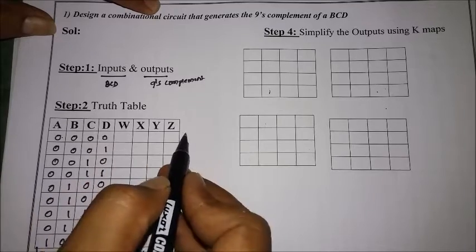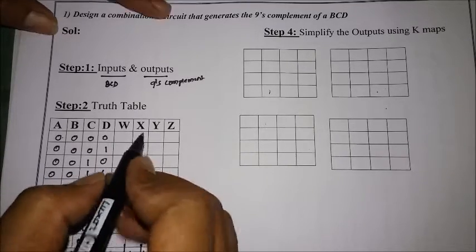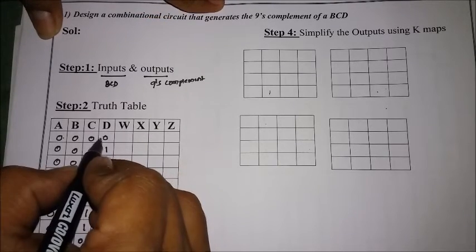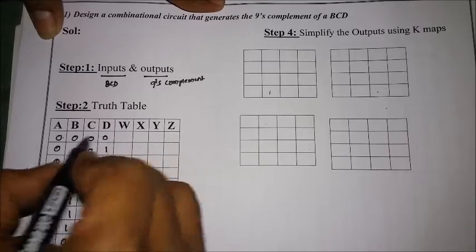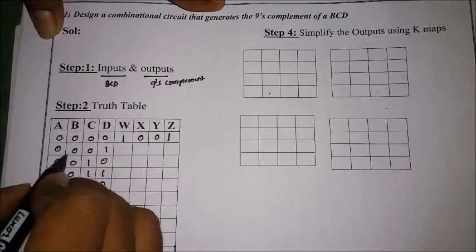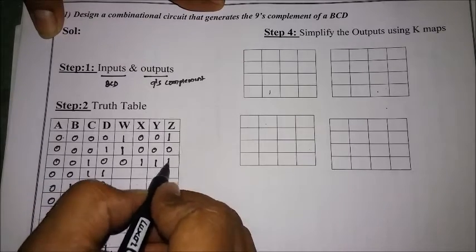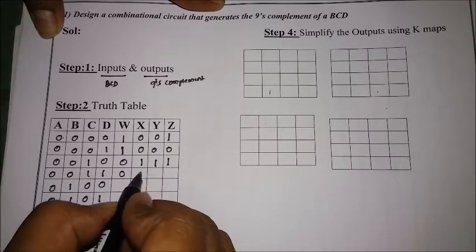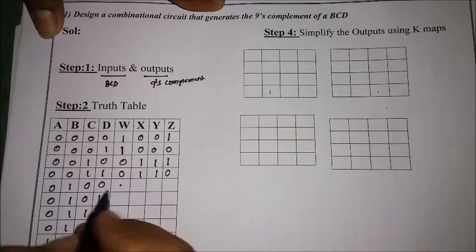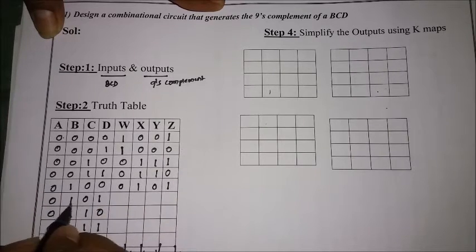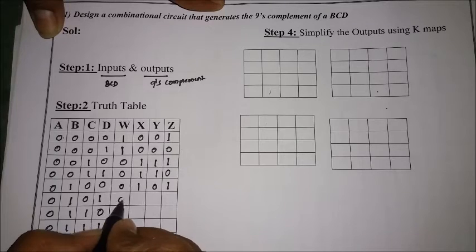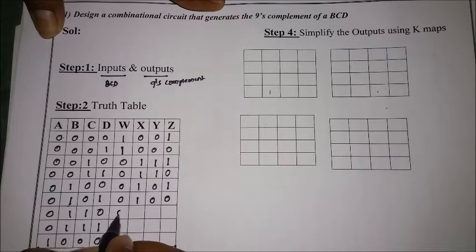The 9th complement is obtained by subtracting each digit from nine. So: 9 minus 0 is 9, 9 minus 1 is 8, 9 minus 2 is 7, 9 minus 3 is 6, 9 minus 4 is 5, 9 minus 5 is 4, 9 minus 6 is 3, 9 minus 7 is 2, 9 minus 8 is 1, and 9 minus 9 is 0. The outputs are labeled W, X, Y, and Z.